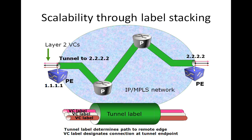To provide connectivity for the different customers, the pink circuit is mapped all the way from the ingress P to the egress P through this tunnel. The same applies to the black circuit as well as the brown circuit. The tunnel label is like a big pipe carrying the services of each customer in different colors, providing services to each customer within the tunnel.